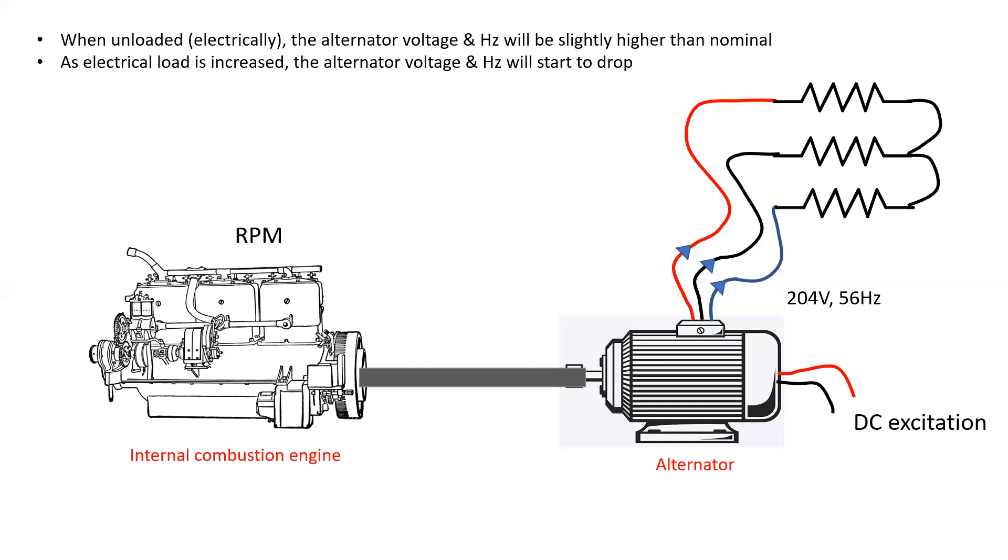As electrical load is connected and increased, the alternator voltage and hertz will start to drop. Now, this is where the AVR, automatic voltage regulator, will come in to help change and adjust and maintain these items.